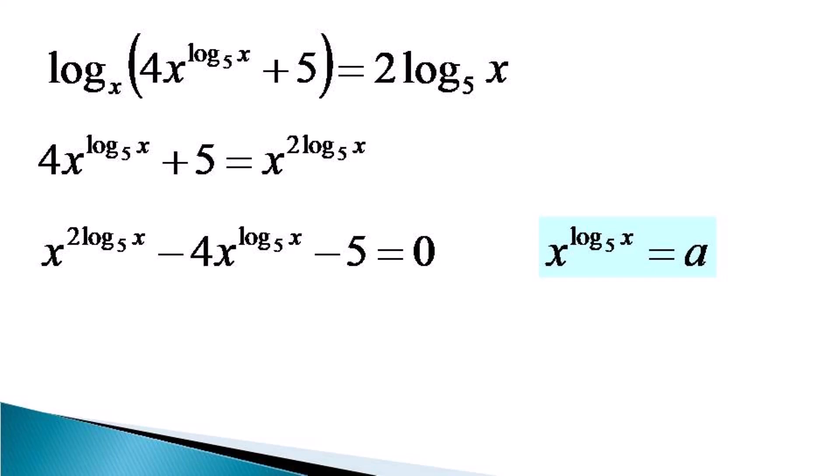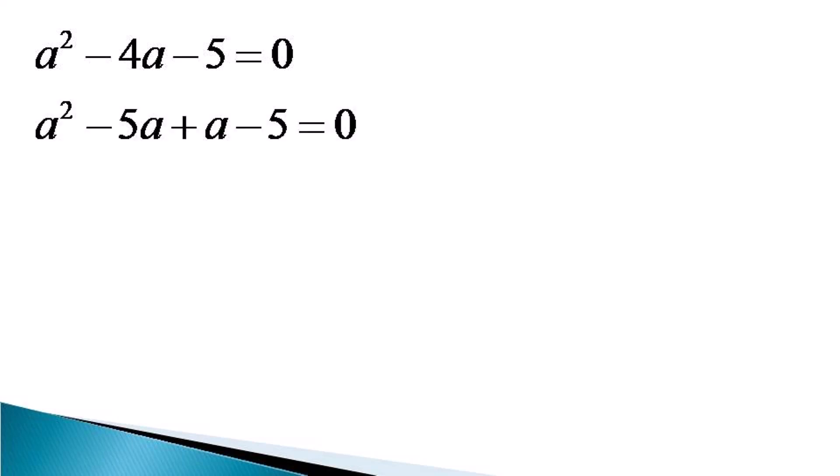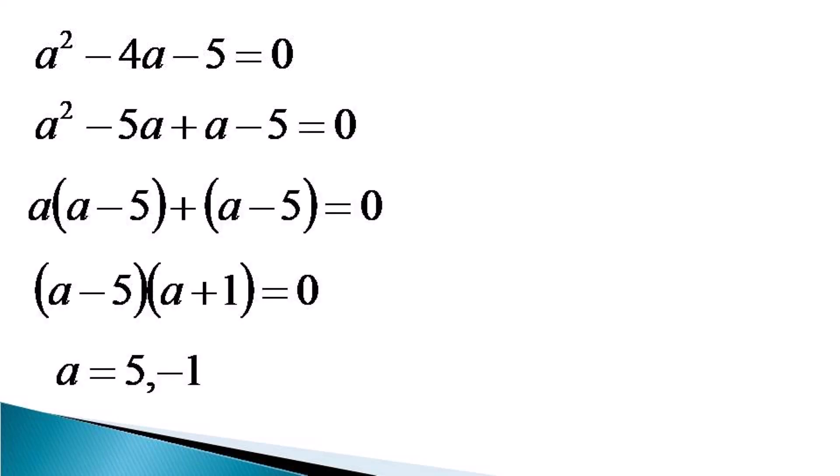This substitution makes our equation in simple quadratic form and it becomes a square minus 4a minus 5 is equal to 0. We just simply factorize it to get a minus 5 into a plus 1 is equal to 0, which gives us two values of a: these are 5 and minus 1.